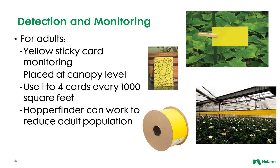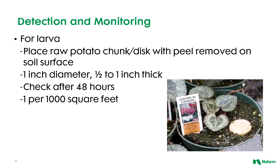Monitoring is key for deciding if and when control measures need to be implemented. For adults, monitoring is easy with yellow sticky cards, with one to four sticky cards placed every 1,000 square feet at canopy level and checked regularly. Hopper finder tape can work to reduce adult populations. For detecting larvae, raw potato discs can be placed on the soil surface at about one disc per 1,000 square feet and checked after 48 hours.